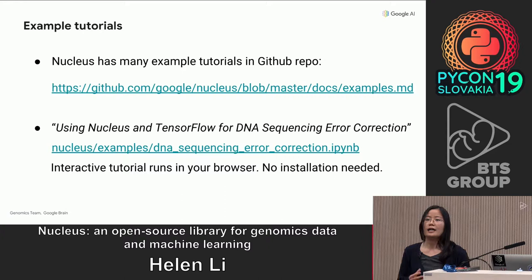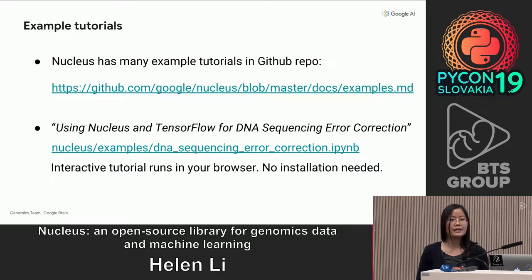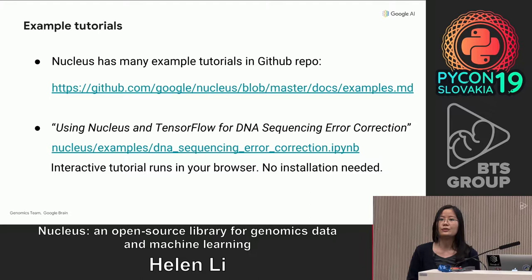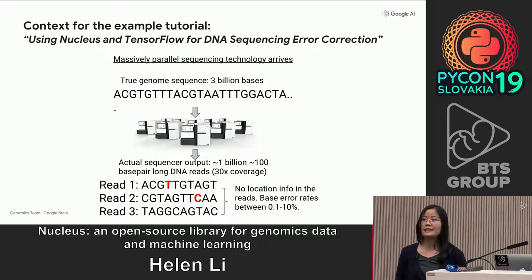Nucleus has many example tutorials bundled in its GitHub repo, and you can find them under the examples directory. Today I will go through one such example. The example is called 'Using Nucleus and TensorFlow for DNA Sequencing Error Correction.' This tutorial runs in an interactive notebook directly in your browser, and you do not need to install any software.